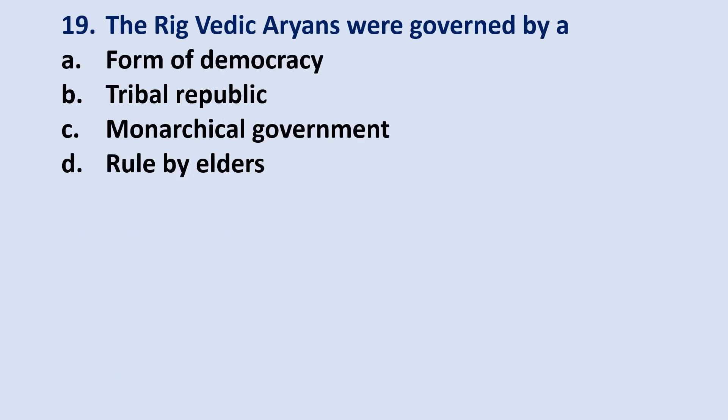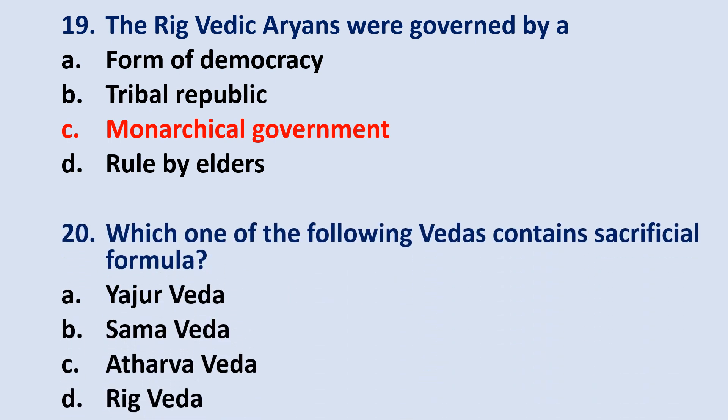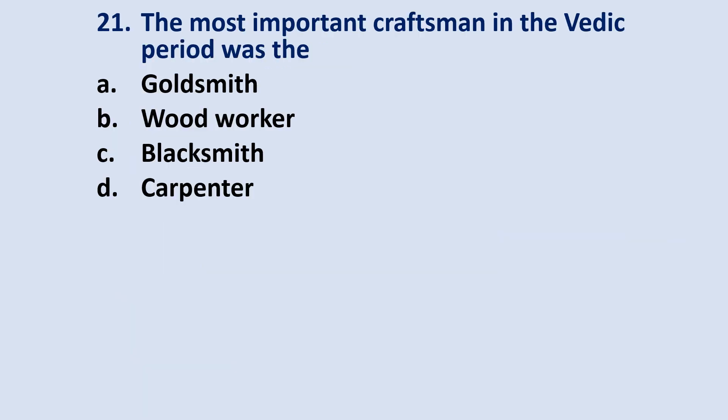Question number 19: the Rig Vedic Aryans were governed by? The answer is option C — Monarchical government. Question number 20: which one of the following Vedas contains sacrificial formula? The answer will be option A — Yajur Veda. Question number 21: the most important craftsman in the Vedic period was the? The answer is option D — Carpenter.